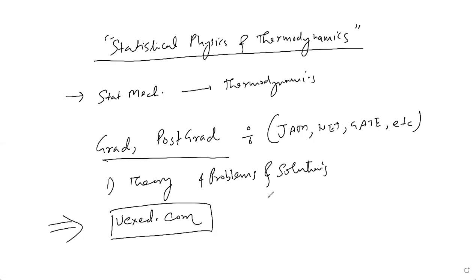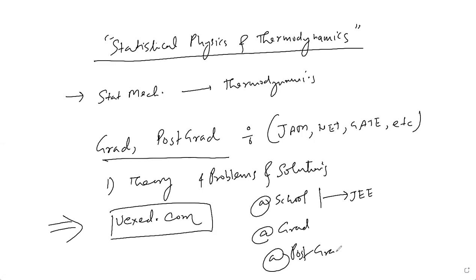UXit comes in various categories — school, grad, and post-grad. At school, JEE classes are currently running. At post-grad, physics is running right now. Those who are interested in physics and have a physics background can come and take our courses and join our batches. Now, coming to our stat mech — let me introduce to you what statistical mechanics basically is.